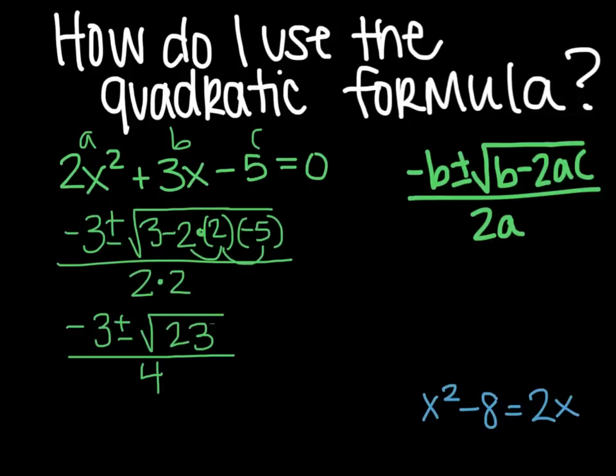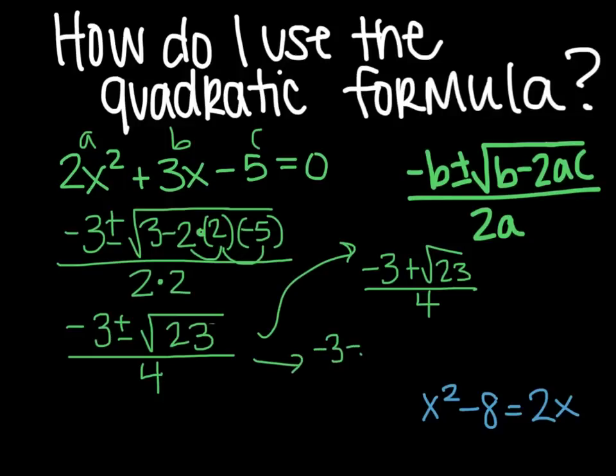And then now you're going to break this apart into two different options. So my first option is going to be negative 3 plus the square root of 23, all divided by 4. And my second option is going to be negative 3 minus the square root of 23 divided by 4.